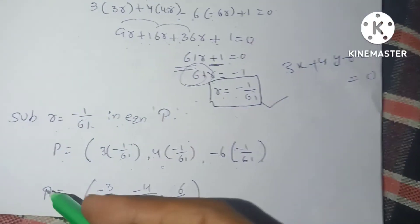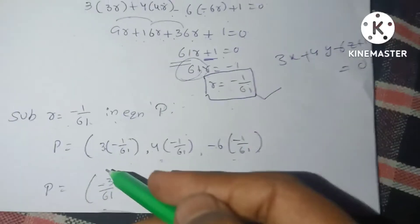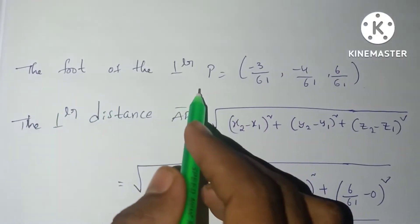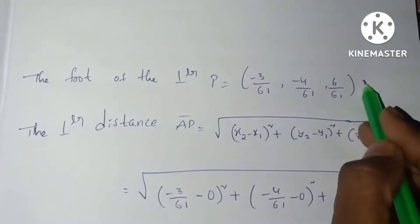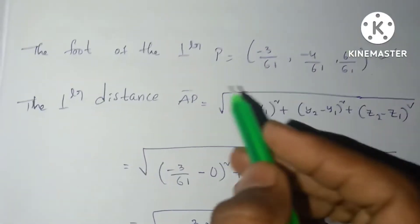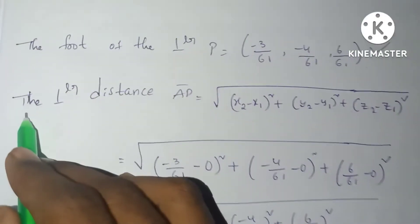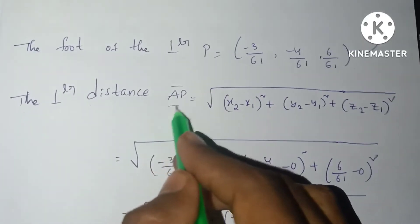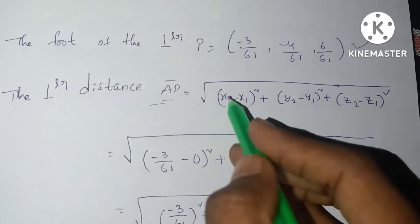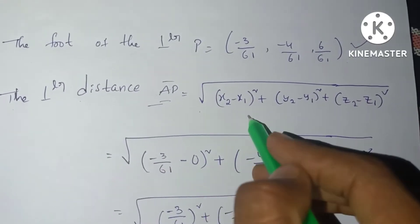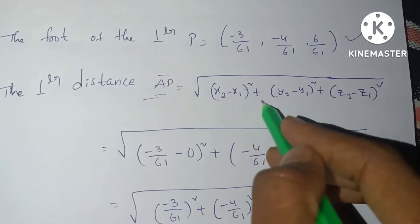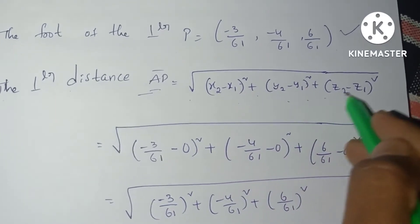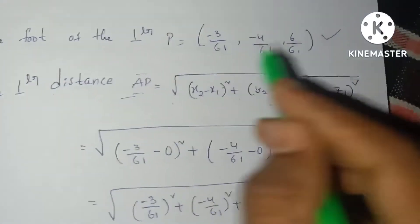The perpendicular distance from A to P is given by the distance formula: √[(X2 - X1)² + (Y2 - Y1)² + (Z2 - Z1)²]. We substitute X1 = Y1 = Z1 = 0 and (X2, Y2, Z2) = (-3/61, -4/61, 6/61).